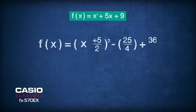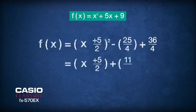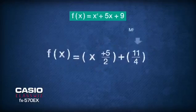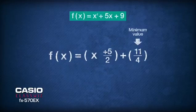Simplifying the function gives squared of x plus 5 over 2 plus 11 over 4. The minimum value is equivalent to the constant at the back of the completed square form,